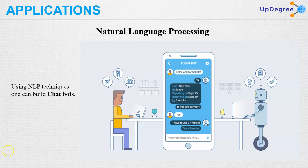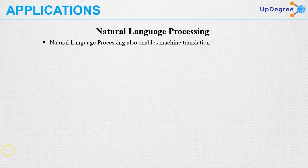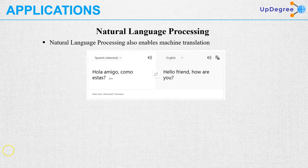Natural language processing enables a chatbot which will interact with the user like a human being. It is greatly useful and also scalable. Natural language processing also enables machine translation. For example, this is a sentence in Spanish: 'Hola amigo, ¿cómo estás?' In English it means 'Hello friend, how are you?' Notice that in Spanish it is only four words, however in English this is five words, so it is not a simple word-to-word translation.